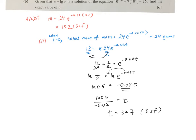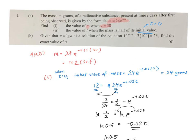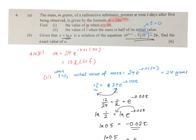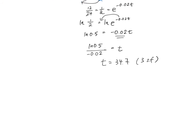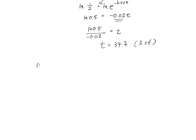Okay, next, given that x equals log a is the solution of this equation, I want to find the exact value of a. Okay, so I look at the question, I have 10 to the power of 2x plus 1 minus 7, 10 to the power of x equals to 26.